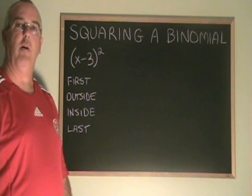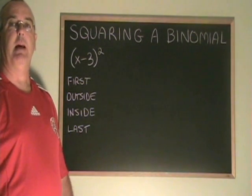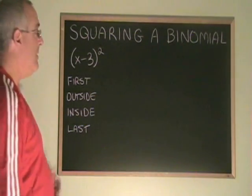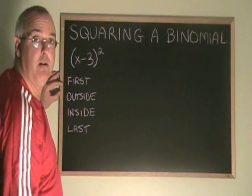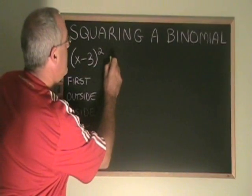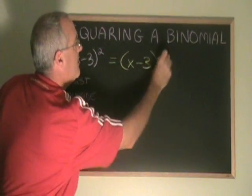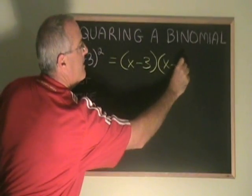When we are asked to square a binomial, we are just being asked to multiply that binomial by itself. Our example is x minus 3 squared. This is the same as x minus 3 times another x minus 3.